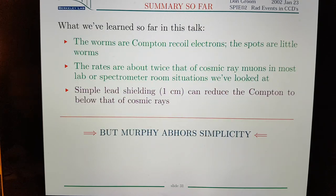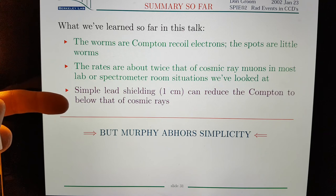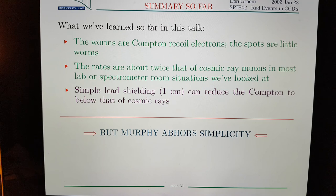On this slide it's saying basically simple lead shielding one centimeter can reduce the Compton to below that of cosmic rays. So the cosmic rays become the most significant signal.